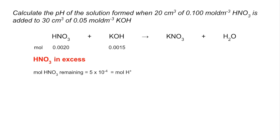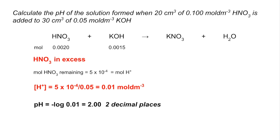We need the concentration of H+, so we divide by the total volume — 50 cm³ (20 plus 30) — giving an H+ concentration of 0.01 mol dm⁻³. Taking the negative log gives a pH of 2.00 to two decimal places.